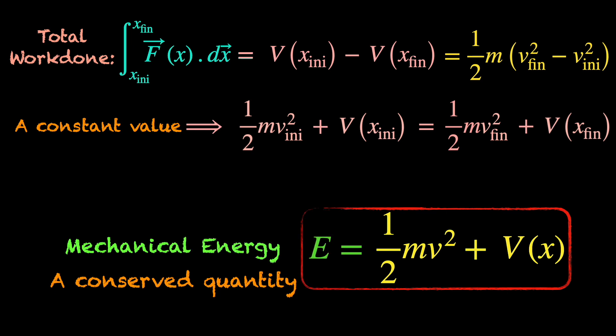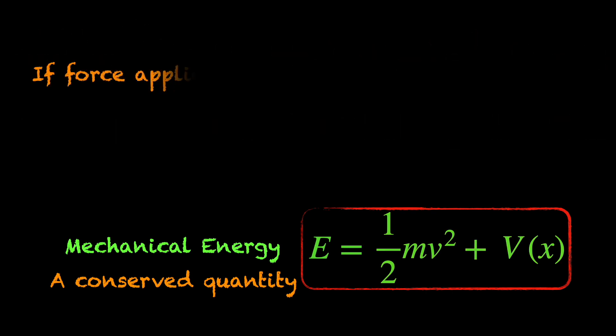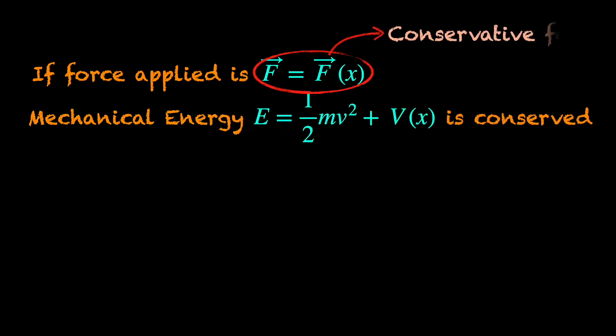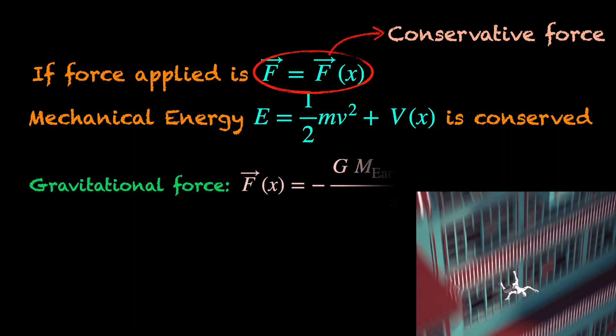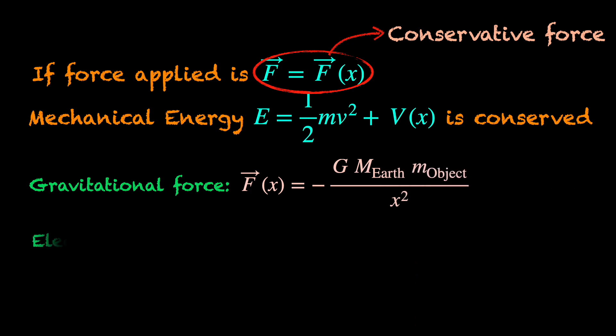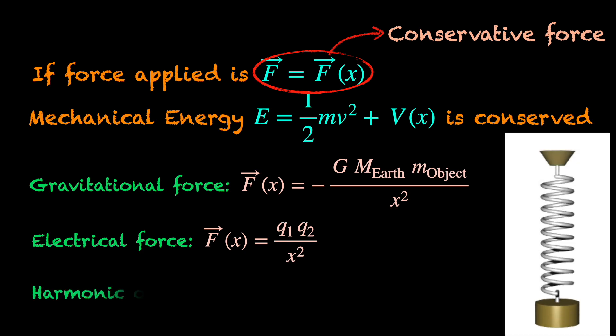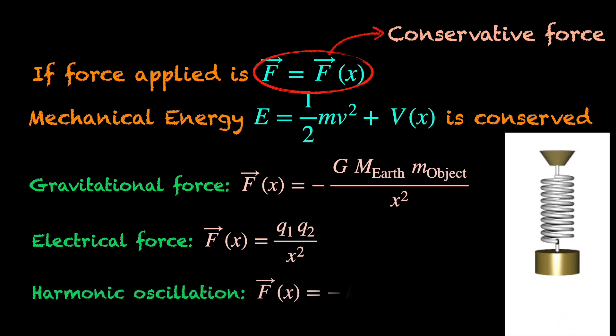The conservation law for the mechanical energy goes like: if the force applied on the object depends only on the position of the object, then its mechanical energy is conserved. This type of forces are called conservative forces and they are very common in physics. For example, earth's gravitational pull on the object is one such example. A charged particle attracted or repelled by another charged particle is another example. A mass oscillating under a spring action. There are so many examples like this.